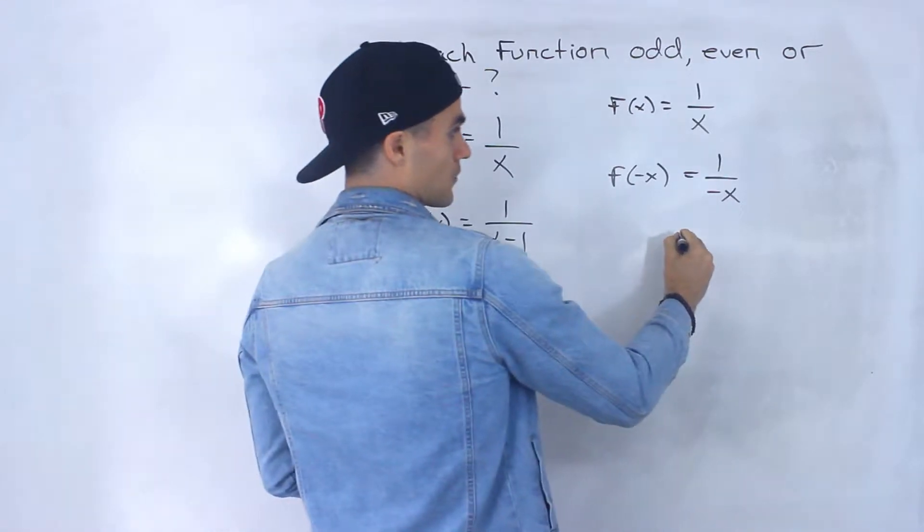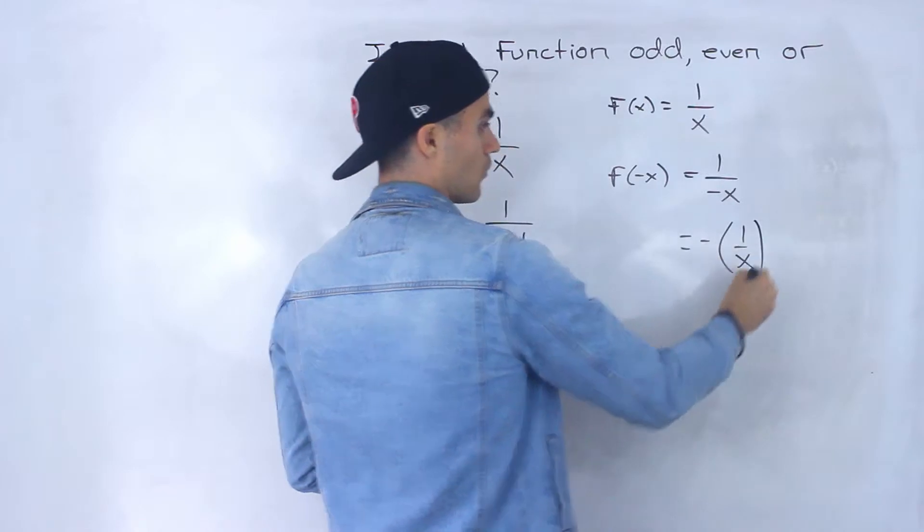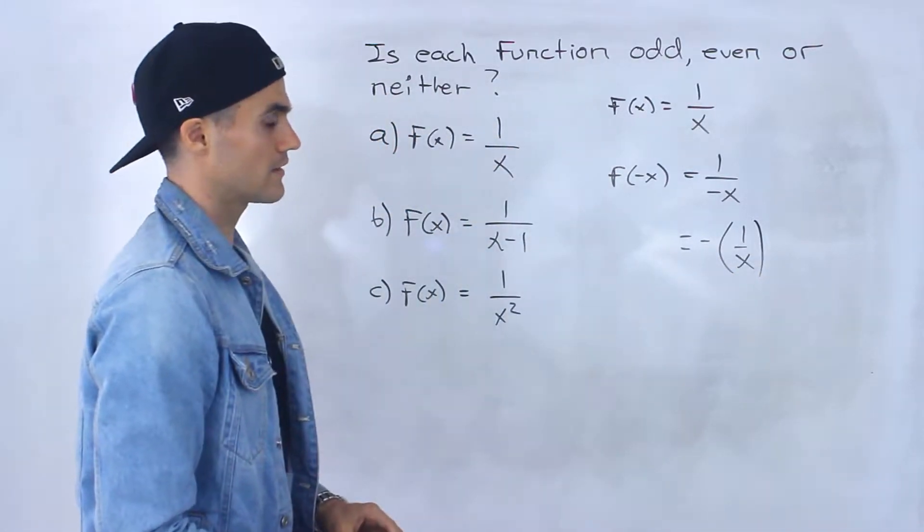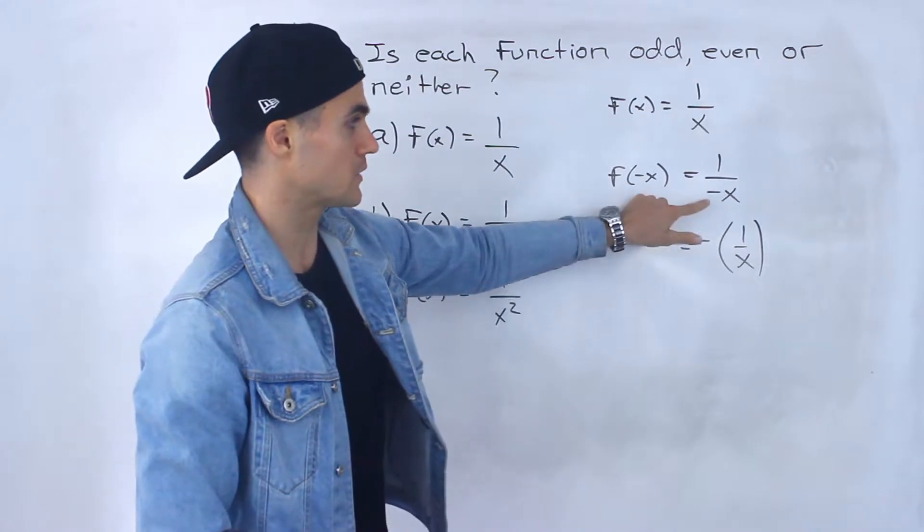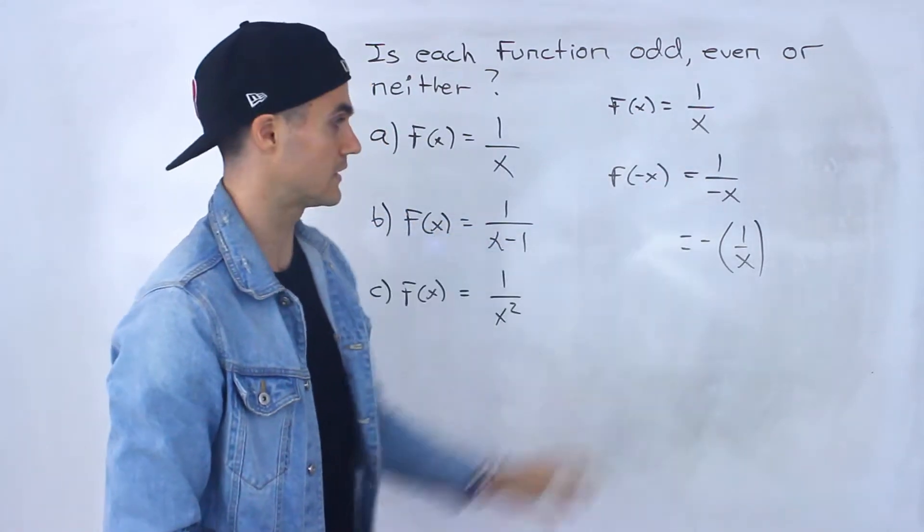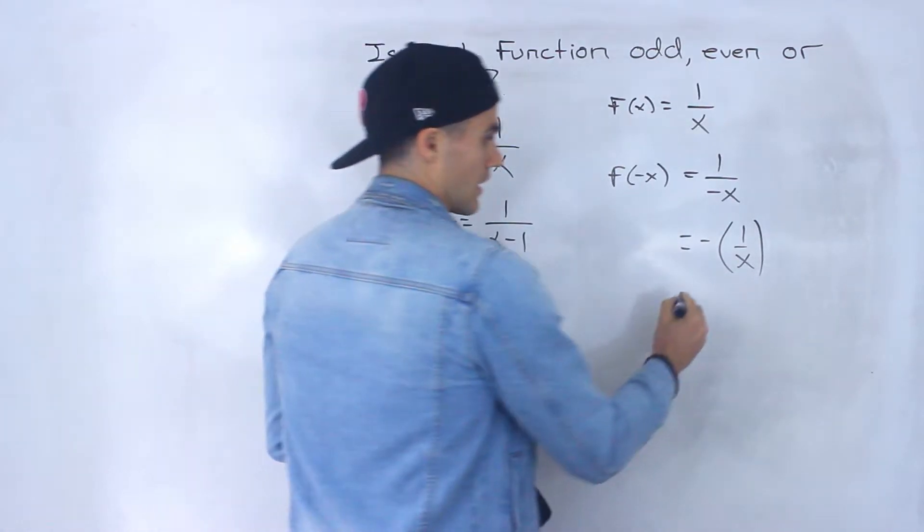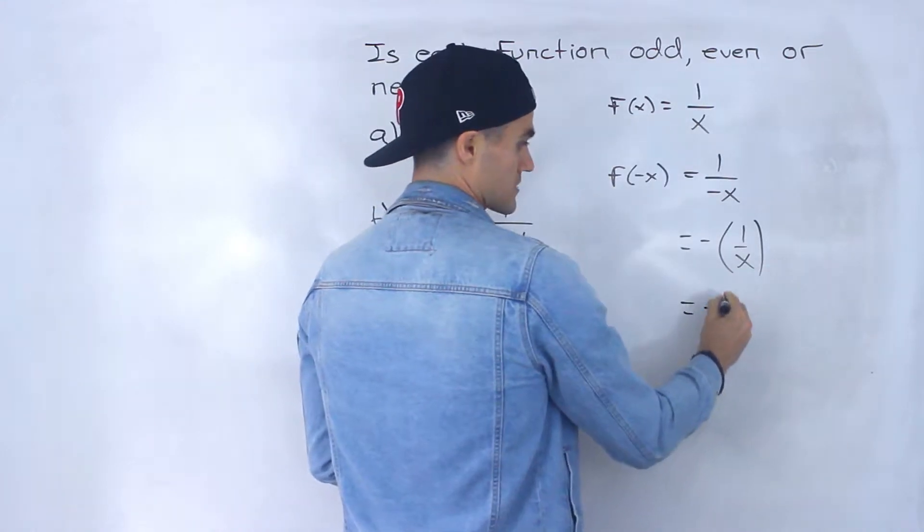And notice that we can rewrite this as negative bracket 1 over x, like that. We can kind of take that negative, put it on the outside. So we could have took the negative, put it in the numerator, I decided to just put it on the outside like that. And then from here, notice that 1 over x, what's that equal to? That's equal to f of x.